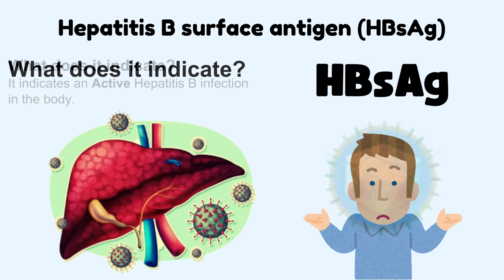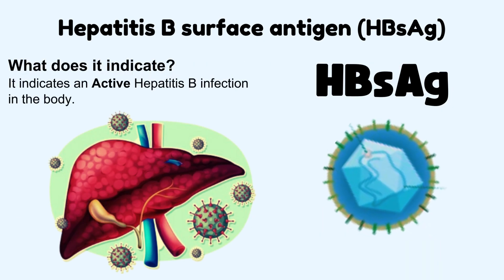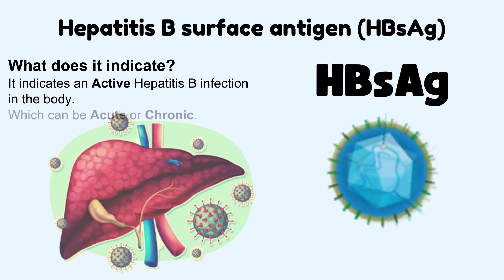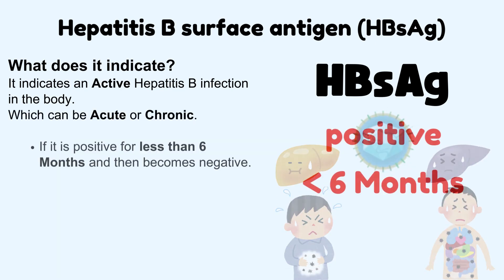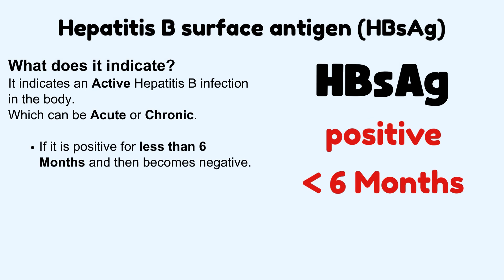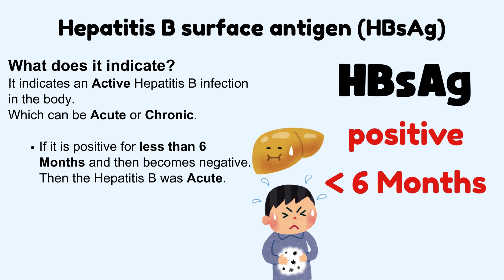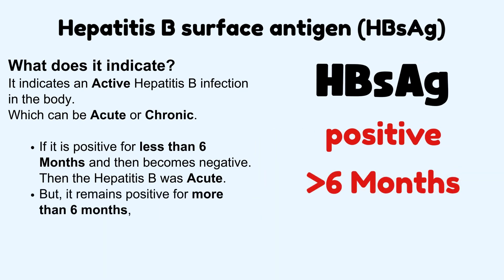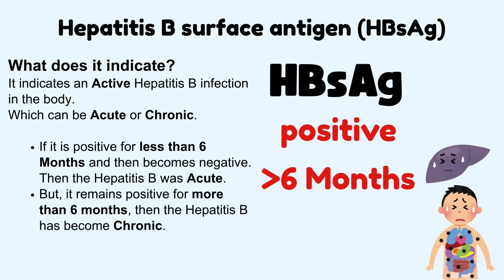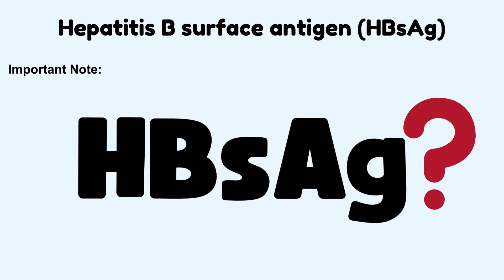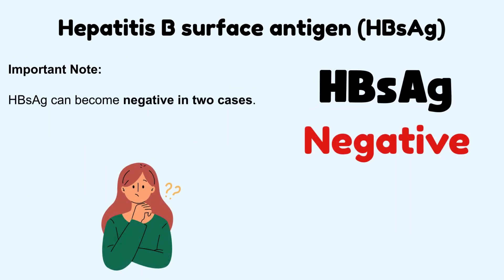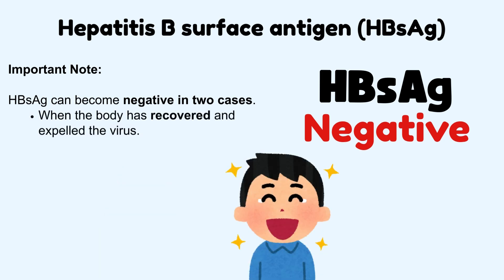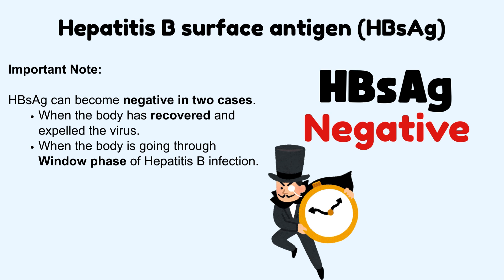HBsAg indicates an active hepatitis B infection in the body, which can be acute or chronic. If it is positive for less than six months and then becomes negative, then the hepatitis B was acute. But if it remains positive for more than six months, then the hepatitis B has become chronic. HBsAg can become negative in two cases: when the body has recovered and expelled the virus, or when the body is going through the window phase of hepatitis B infection.